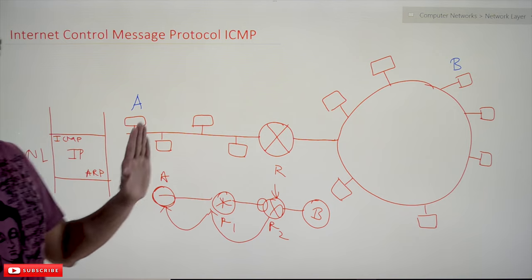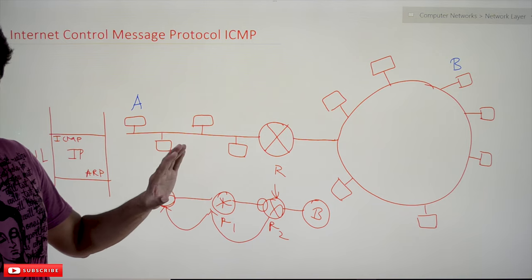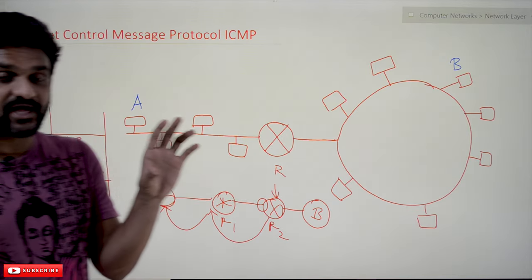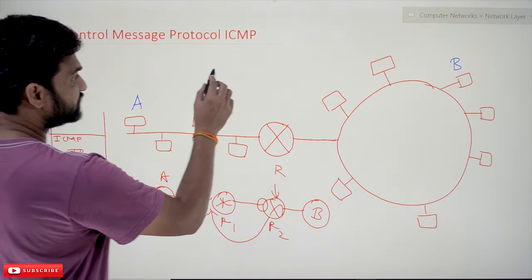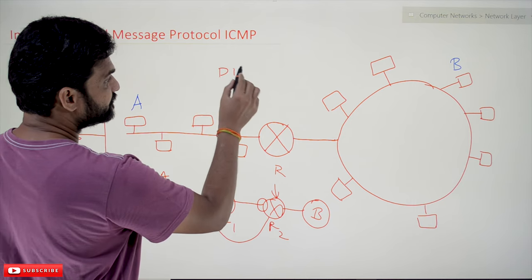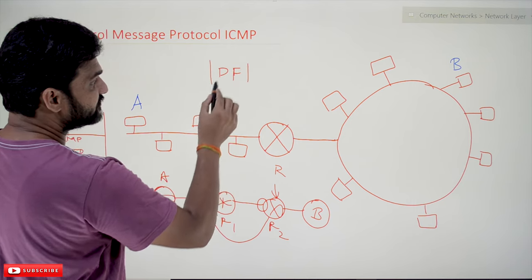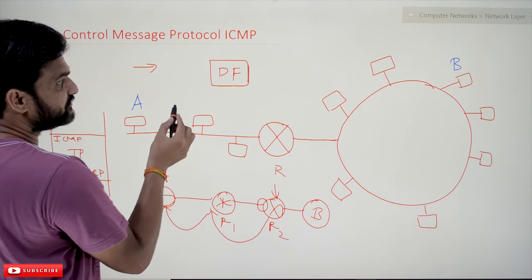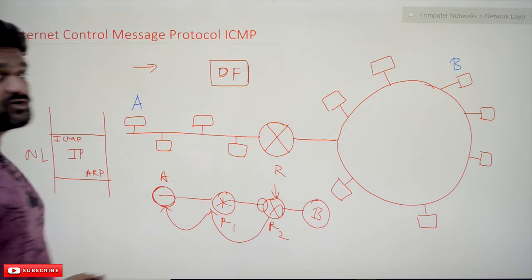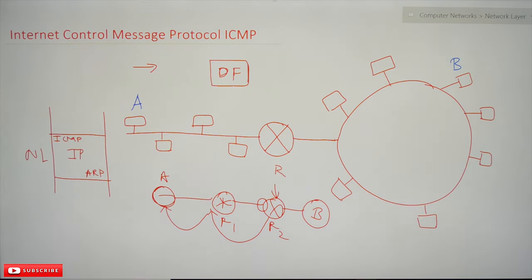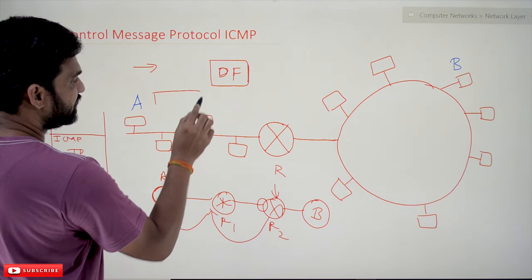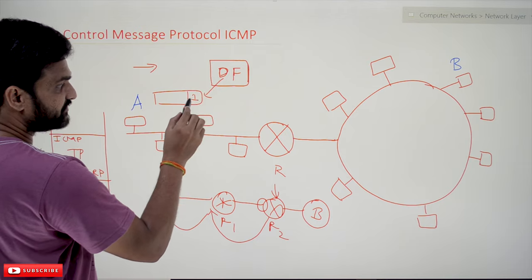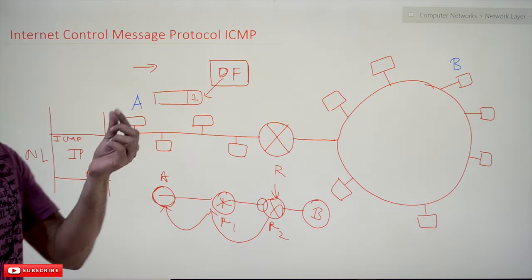In a similar way, consider the 'Don't Fragment' scenario. In the IPv4 header we have seen a field called DF in the second row. DF means 'Do Not Fragment.' For example, if A has a packet and sets the DF bit to 1 in the IPv4 header, it means the packet being transmitted should not be fragmented.